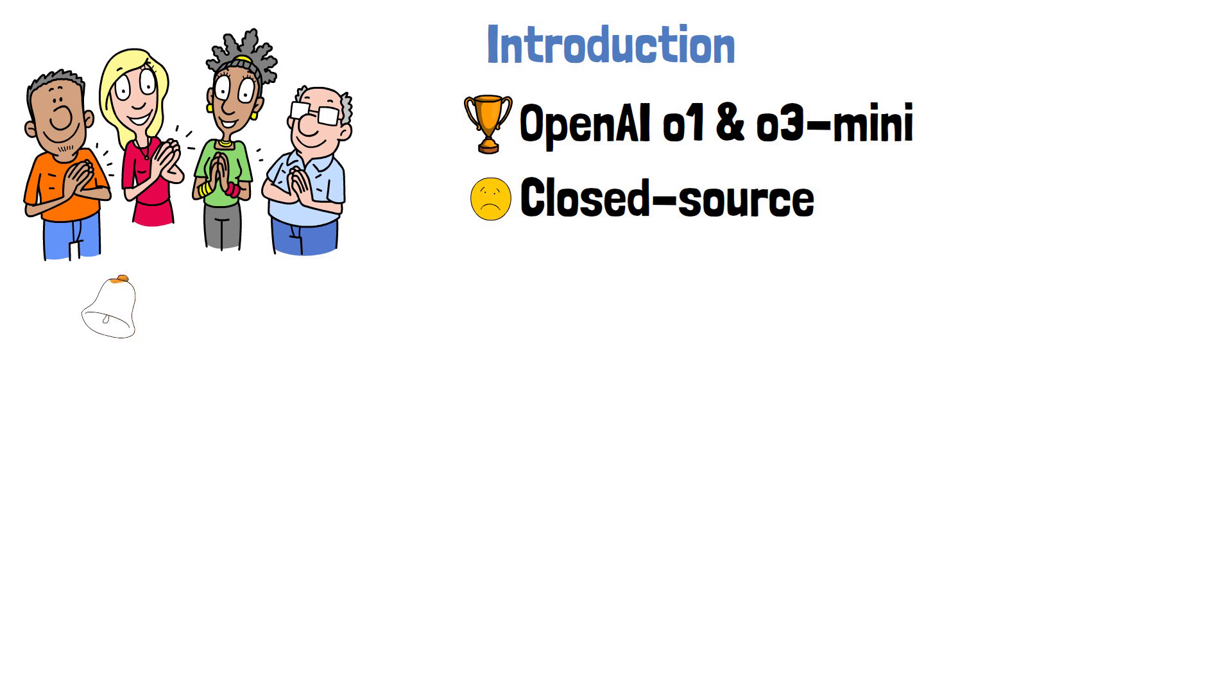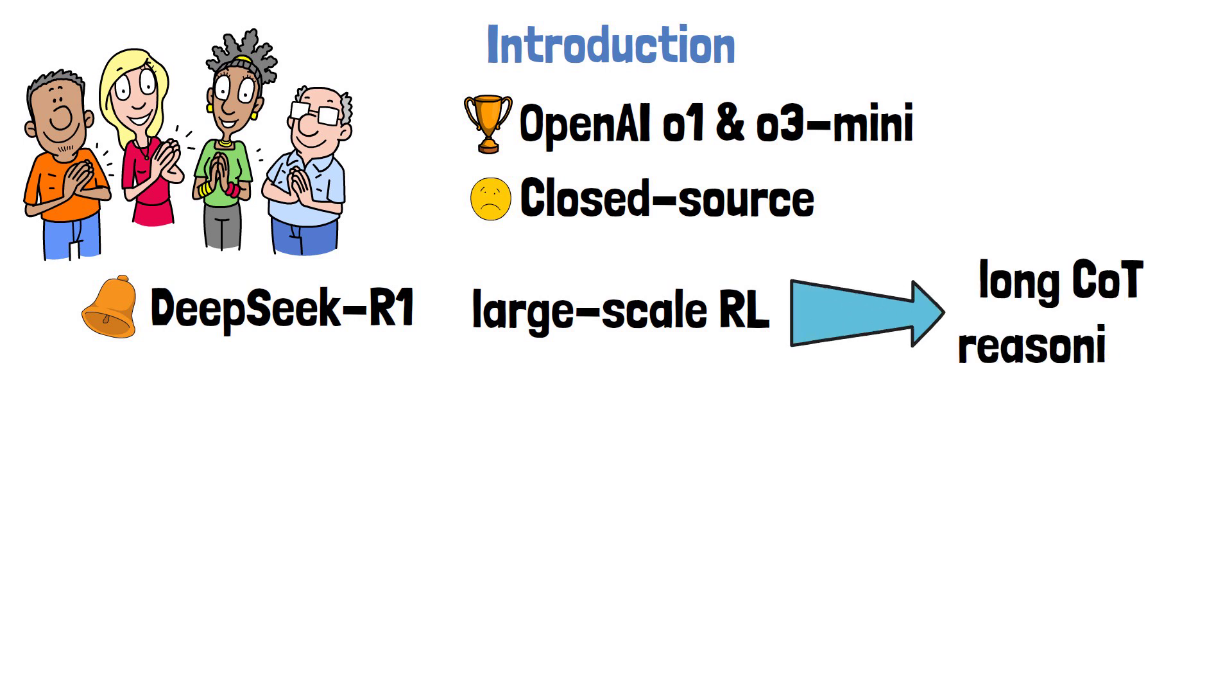This has sparked a wave of research to improve reasoning capabilities in LLMs, building up to the release of DeepSeek R1, which has democratized the idea of using large-scale reinforcement learning to enhance long chain of thought reasoning where the model learns to devote substantial thinking time to solve a problem. However, some technical details behind DeepSeek R1 reinforcement learning training are unclear, making it difficult for the AI community to reproduce its results.